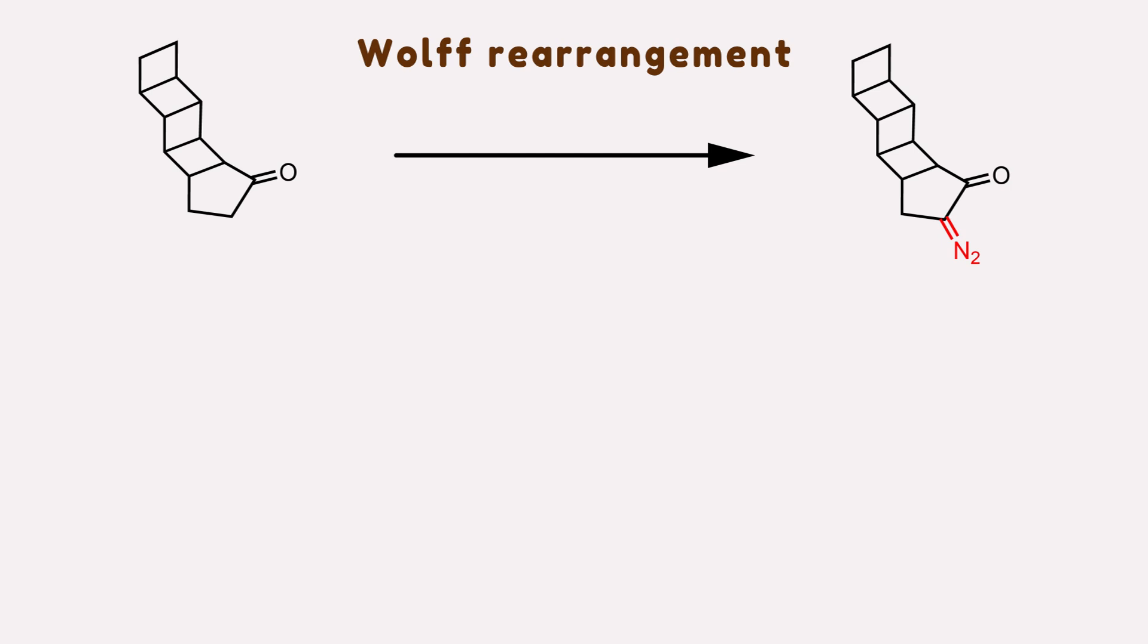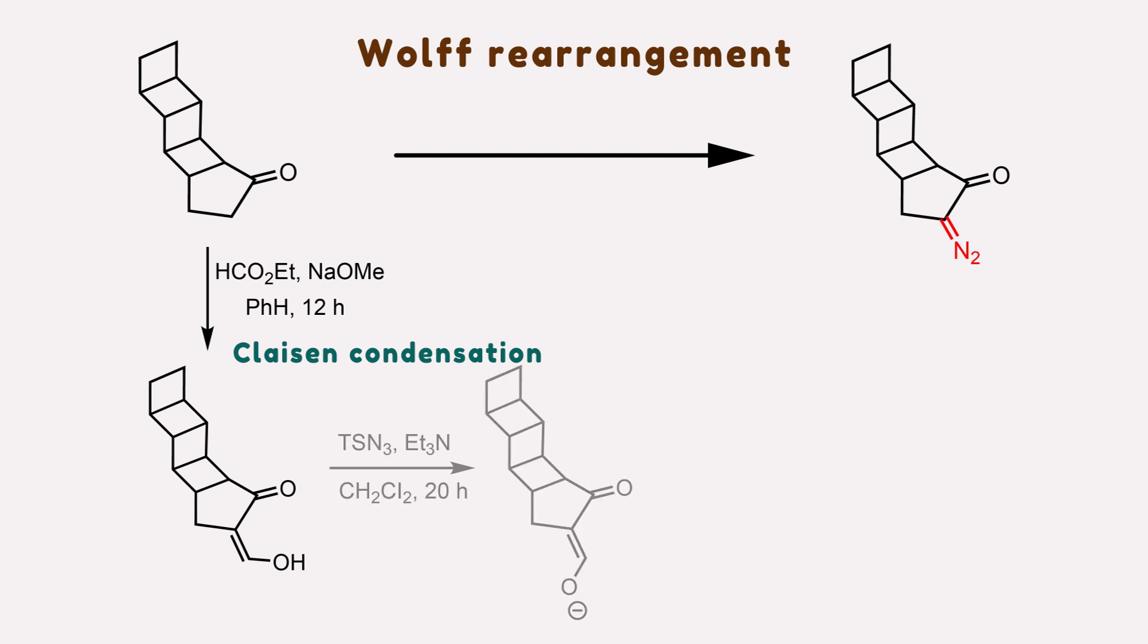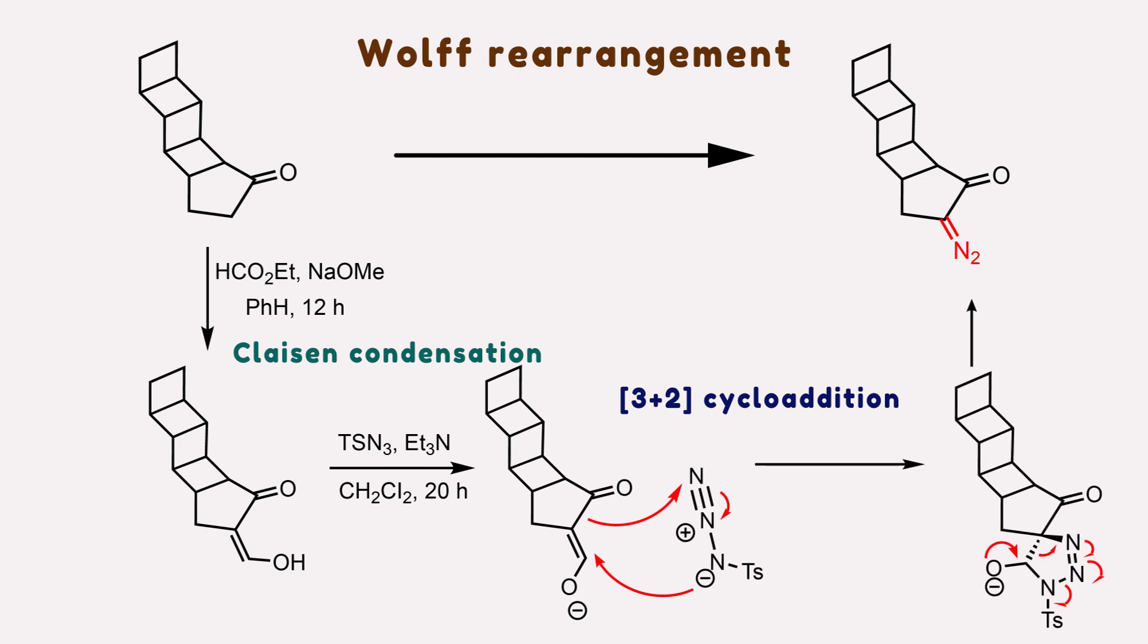Firstly, sodium methoxide mediates Claisen condensation with ethyl formate to provide enol. Exposure of enol to tosyl azide and triethylamine prompts a 3+2 cycloaddition, which delivers alpha-diazo ketone.